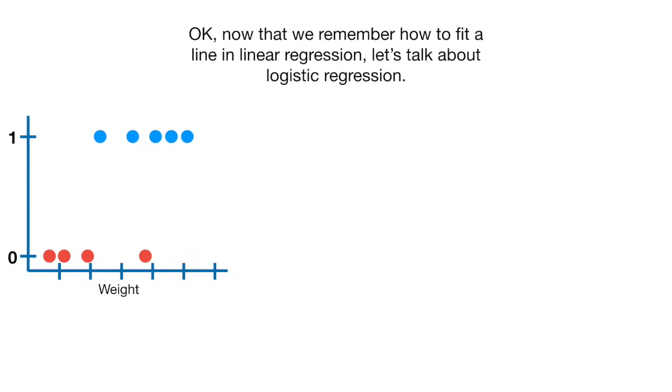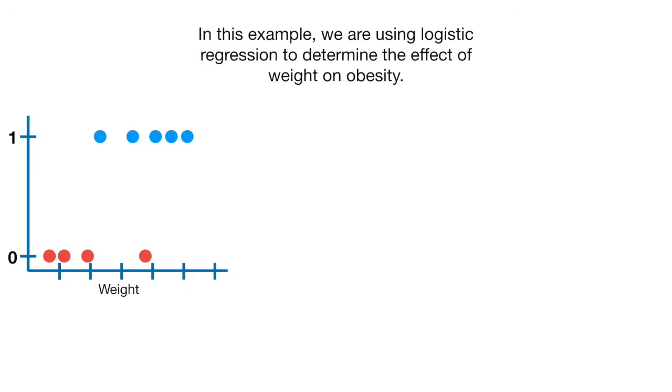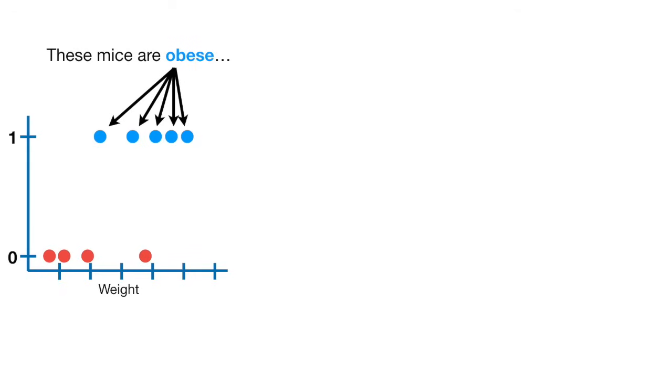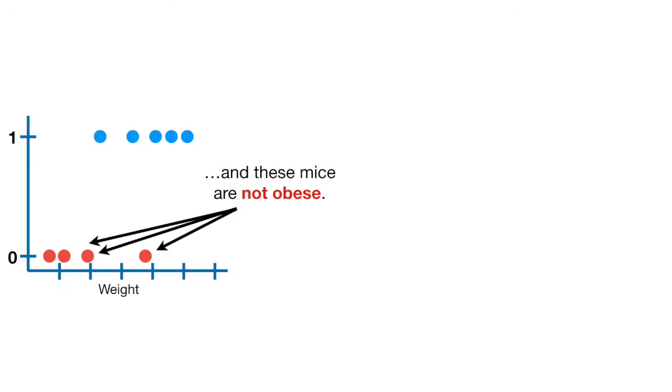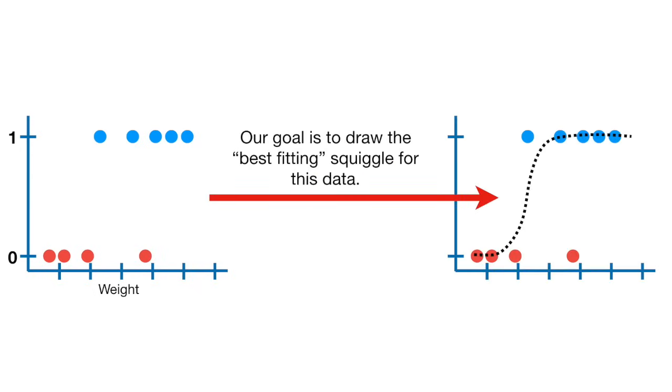OK, now that we remember how to fit a line in linear regression, let's talk about logistic regression. In this example, we are using logistic regression to determine the effect of weight on obesity. These mice are obese, and these mice are not obese. Our goal is to draw the best-fitting squiggle for this data.